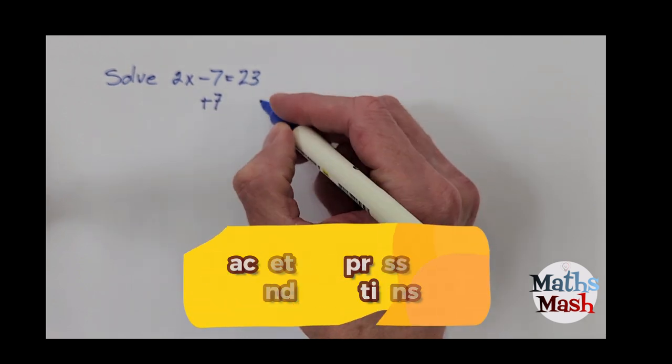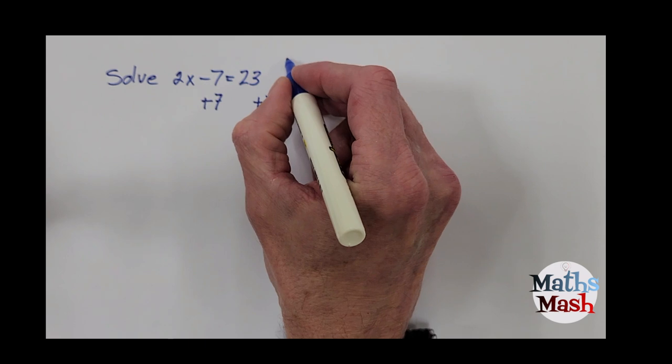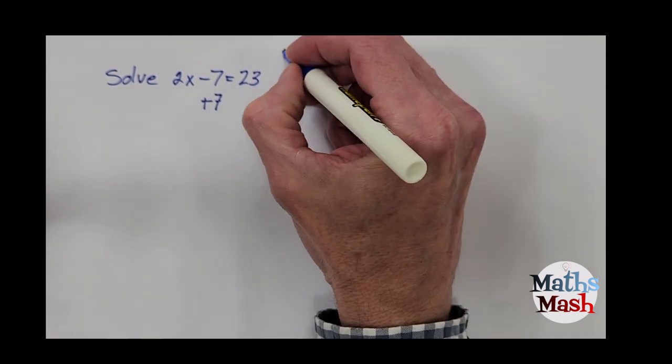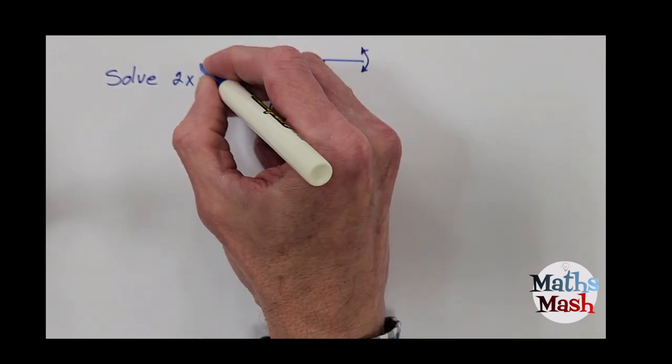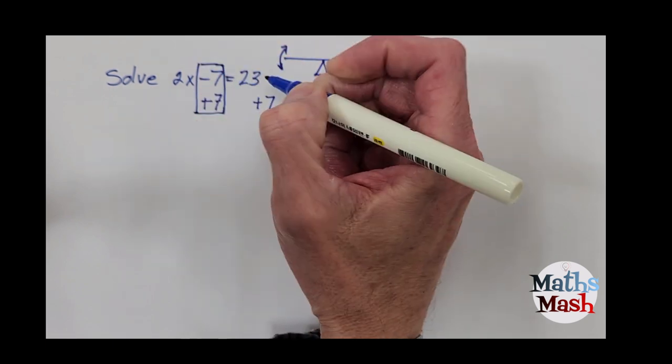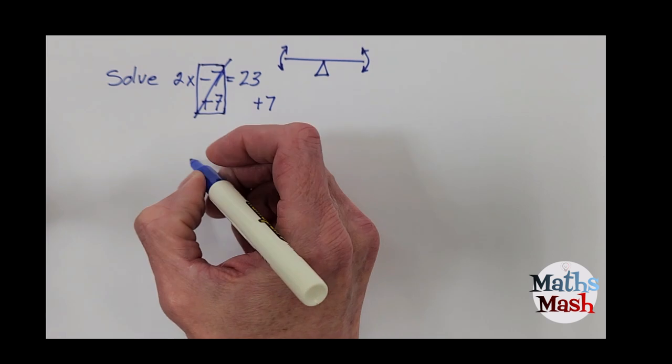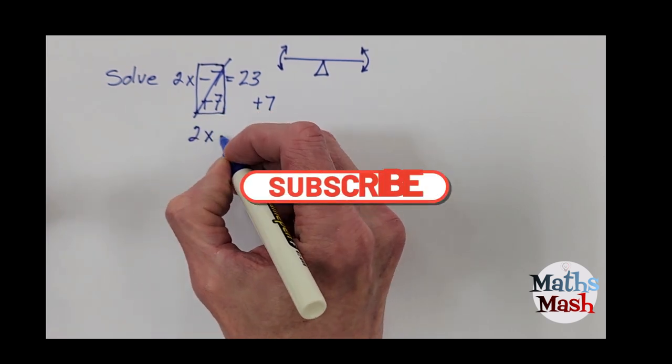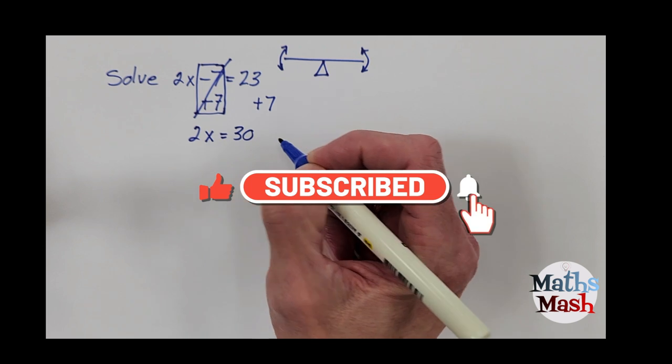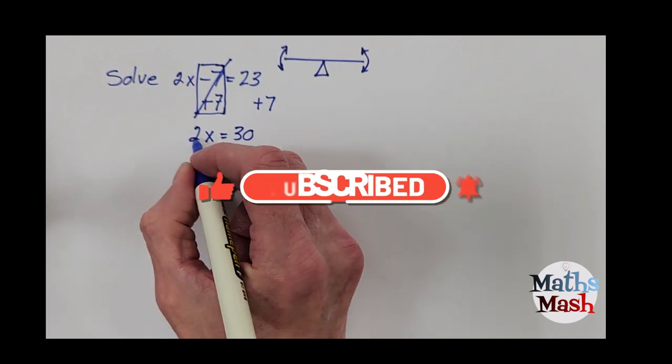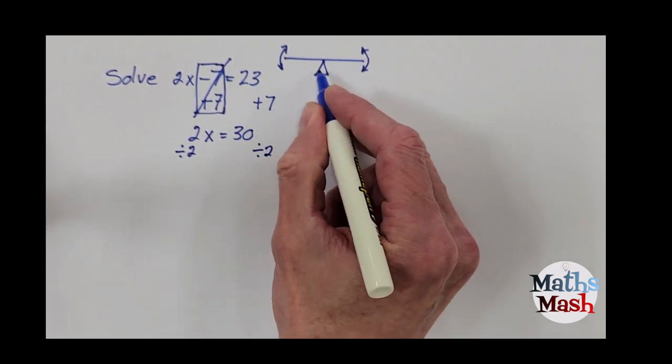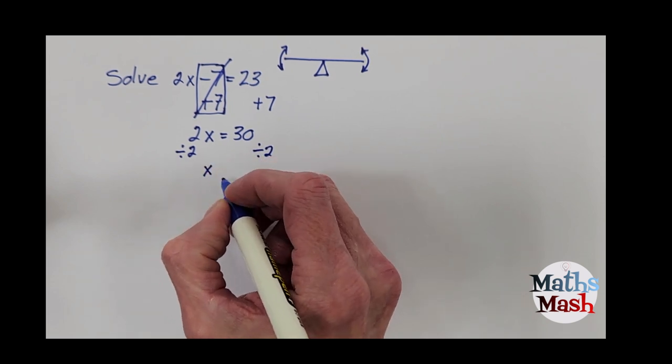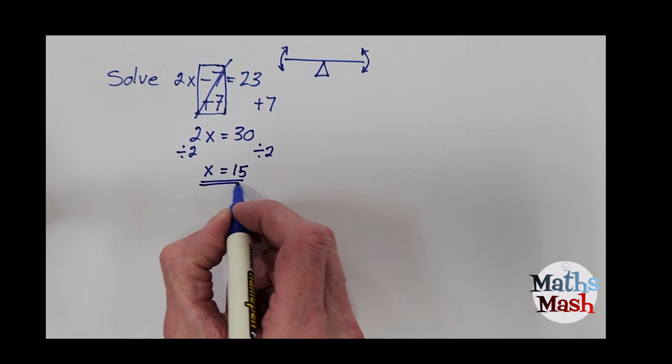So I'm going to add 7 to both sides. Now if you think about a scale, you need to try and keep it balanced. All right, so whatever you do to one side you have to do to the other. So here I'm going to add 7, okay, so that I can cancel it out. So then I add 7 to the other side of the equal sign. So I've got 2x, 23 plus 7 makes 30, and now I'm going to divide by 2 so that I can get rid of that 2. So I divide by 2 again both sides because I want to keep that balance steady. So that gives me x equals 15. Okay, now next one.